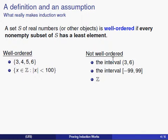That's what we're going to talk about in this video. To understand this, we need to make a definition. We're going to say that a set S of real numbers is well ordered if every non-empty subset of S has a least element.